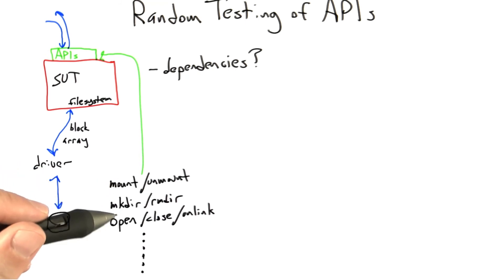We have calls like make directory. Mkdir creates a directory and remove directory deletes one. Open can be used to create or just open an existing file. Unlink deletes one. I'm talking about the Unix-style file system interface. If we want to do random testing of a file system, we're going to be issuing sequences of calls in the file system API.